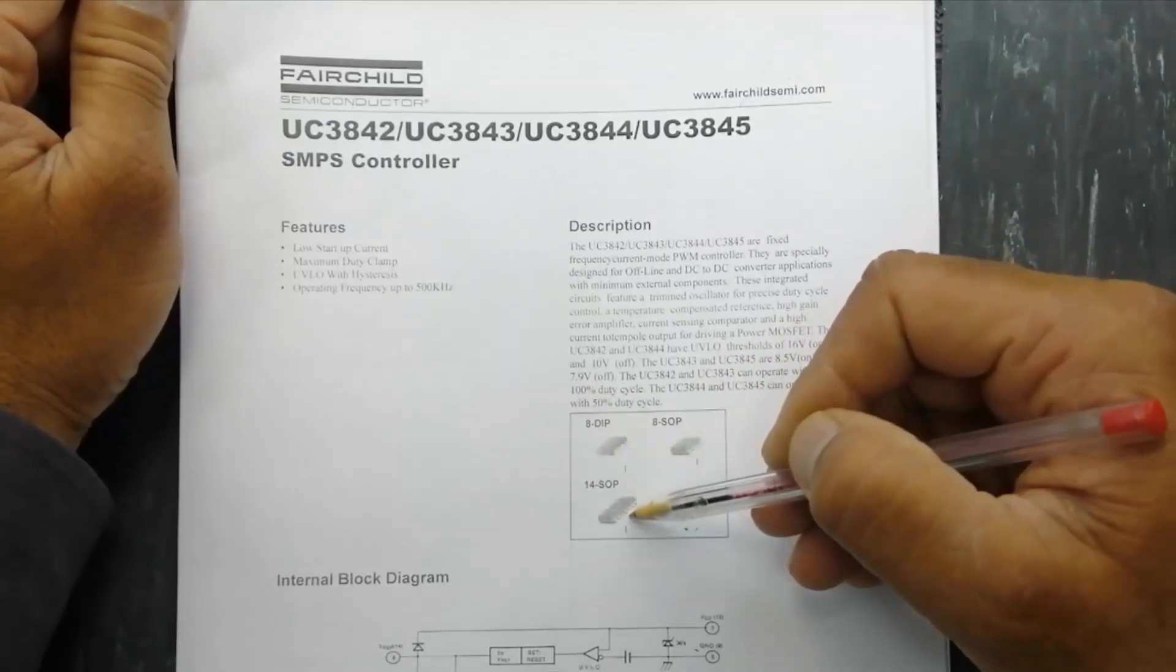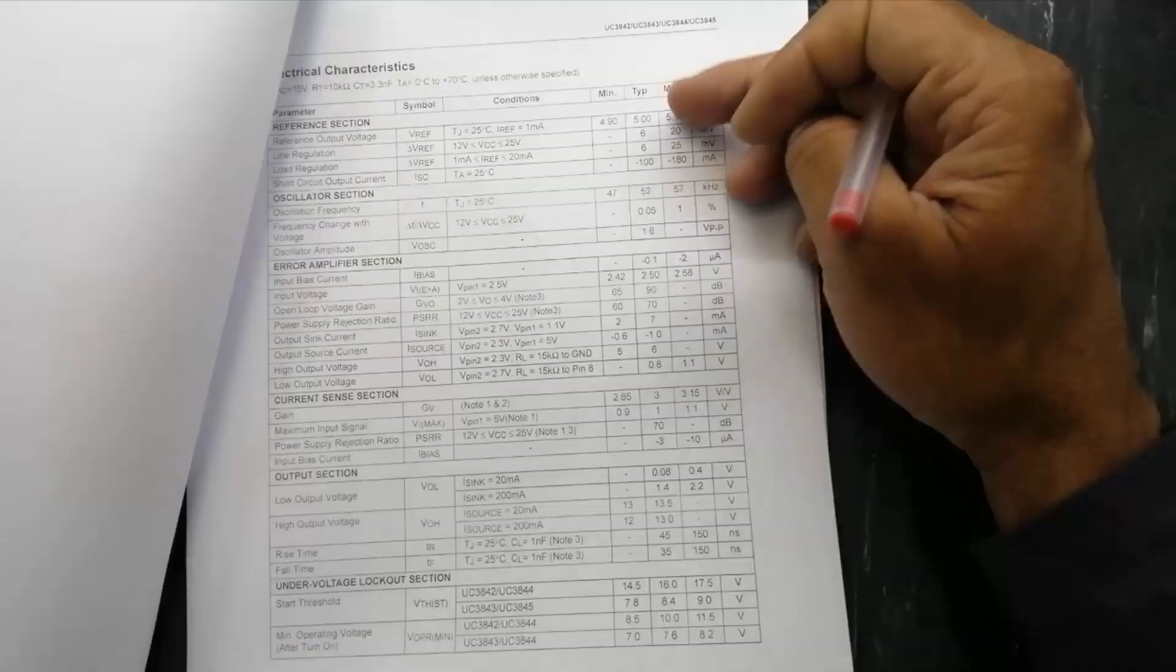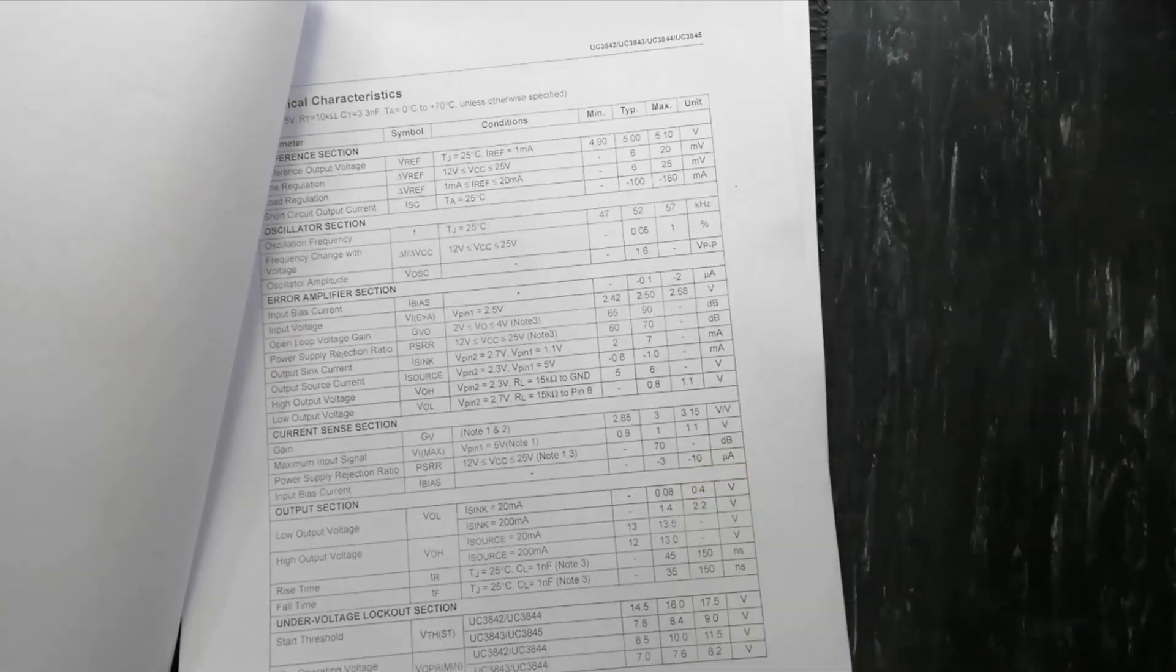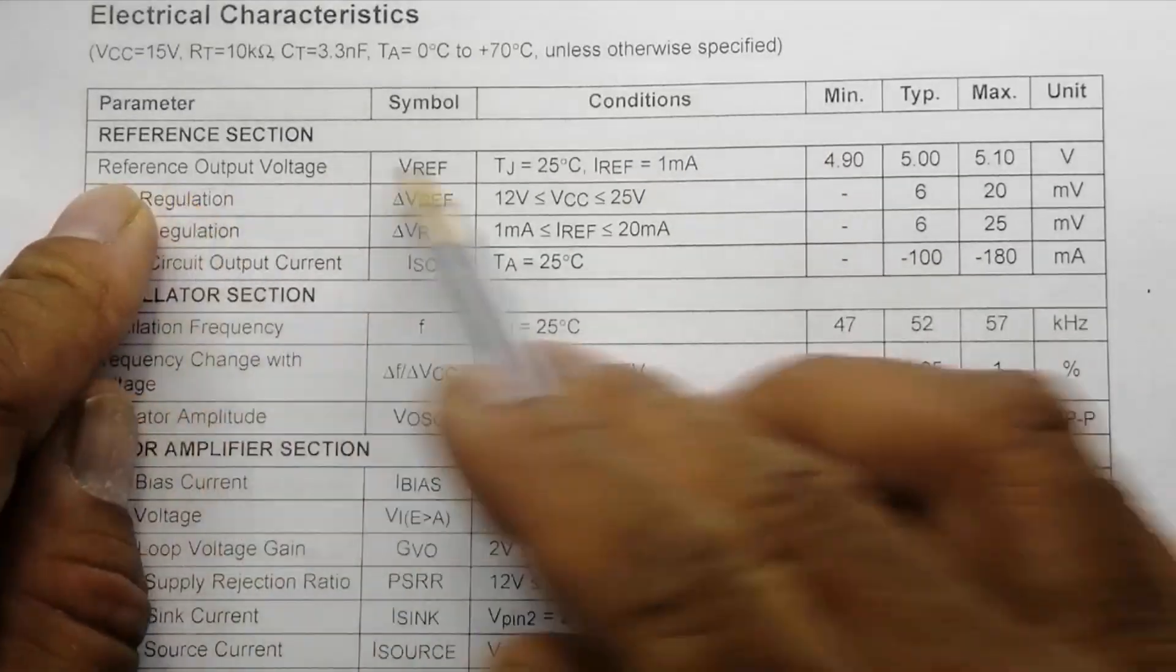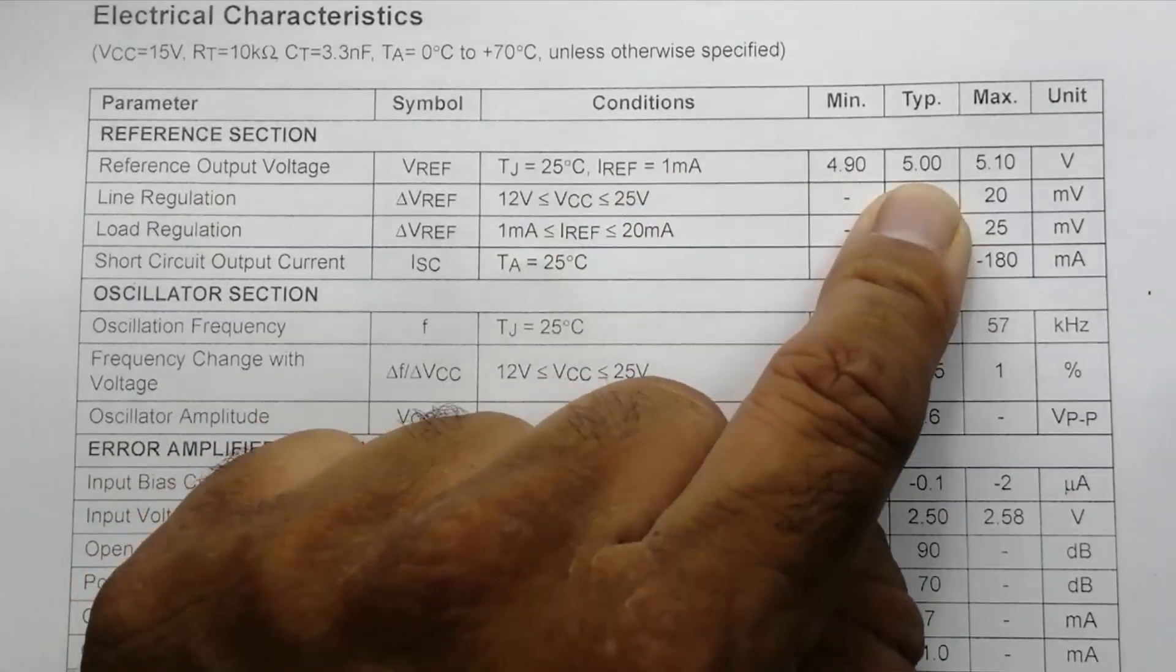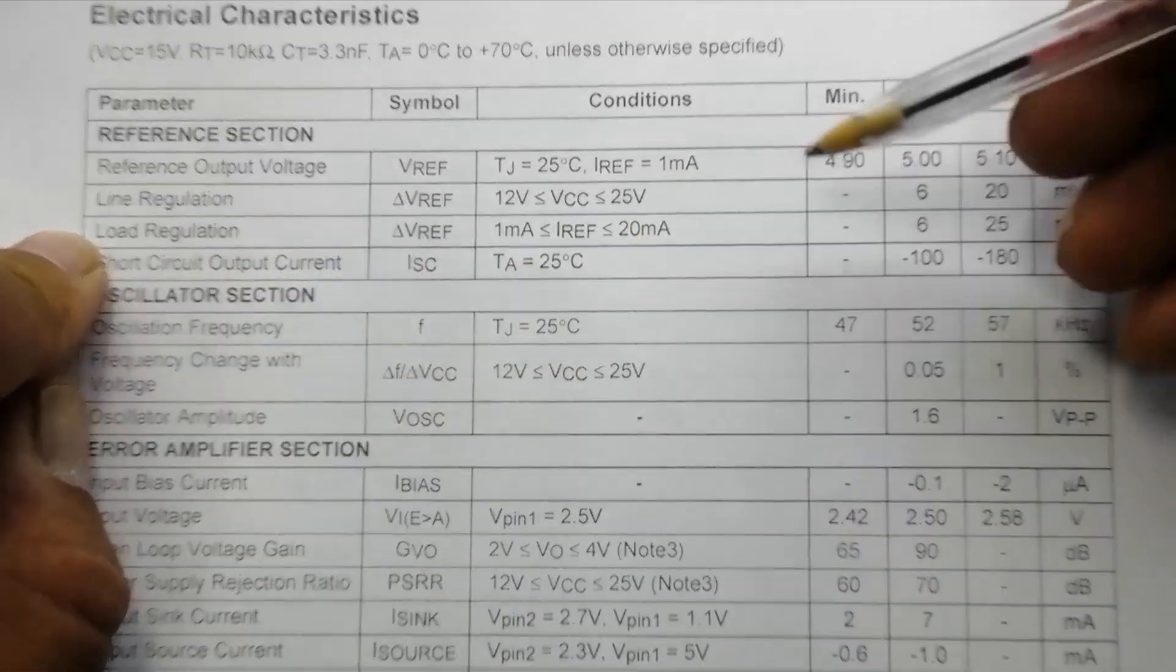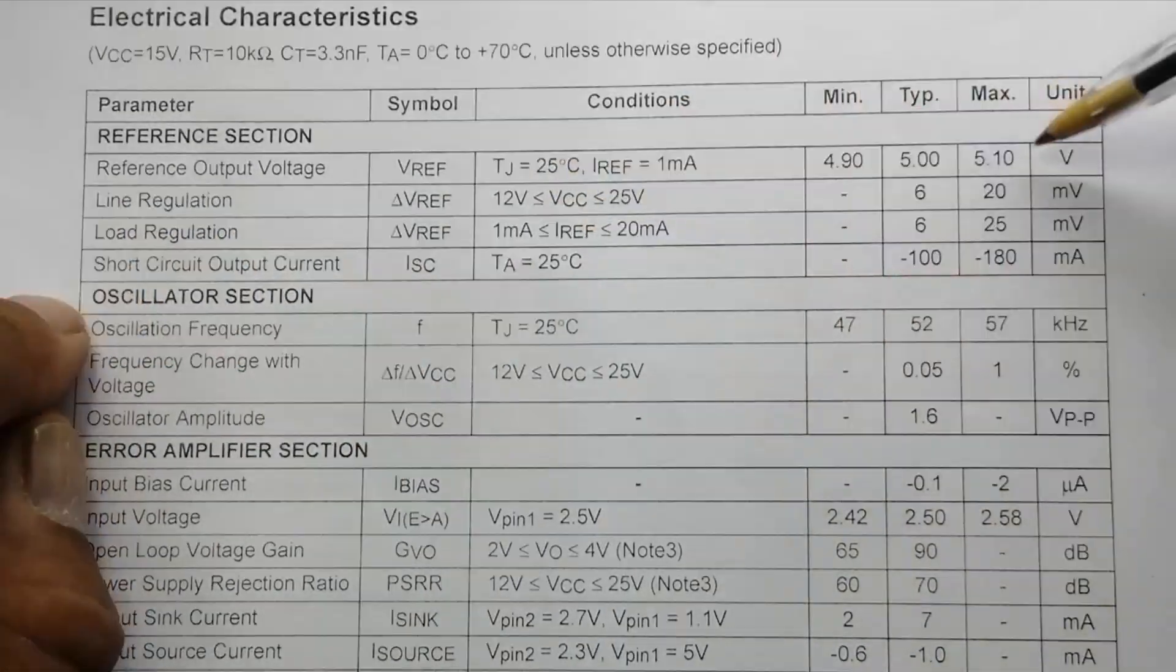So it is a current mode SMPS controller. Here is the complete datasheet. If you see here, it has its own reference 5 volt reference, that's 4.9 to 5.1 volts. It provides a reference and then it monitors for calculation of frequency.